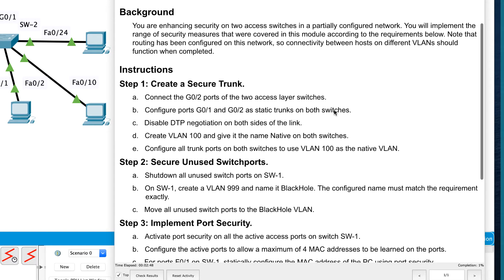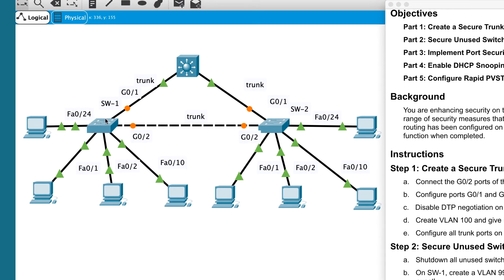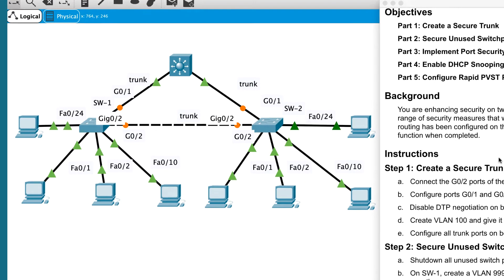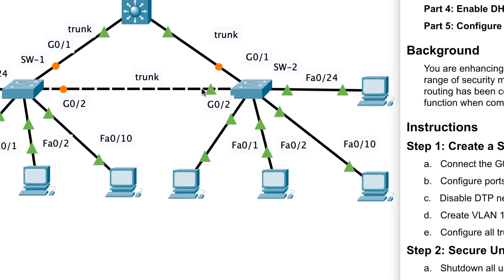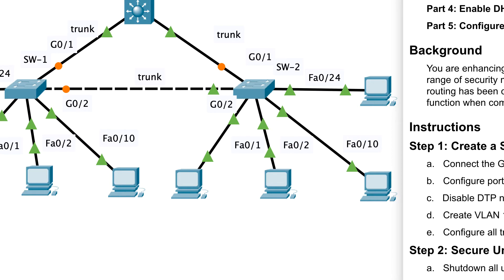I can see there's a trunk port going up to the multi-layer switch and I've just connected this port to my other access layer switch. Reading ahead, a number of the tasks are to do with securing the trunk. The next part says to disable DTP negotiation on both sides of the link, create VLAN 100 named 'native' on both switches, and configure all trunk ports to use VLAN 100 as the native VLAN. I'll do all of step one together.